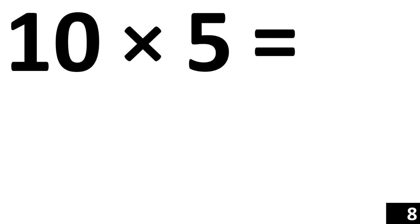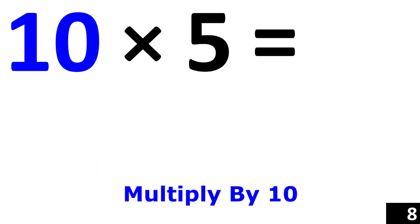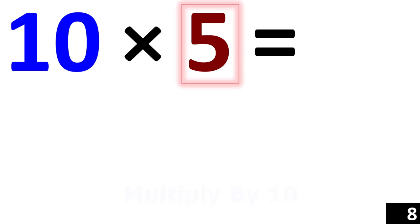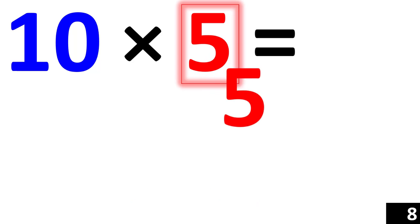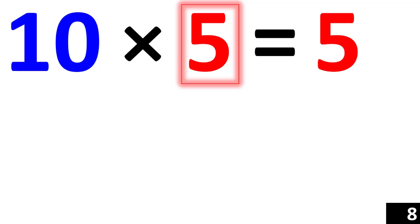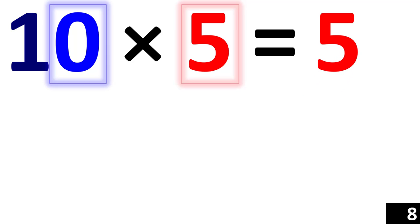For 10 times 5 we just use the rule of 10. So 10 times 5 is a 5 with an added 0, which gives us 50.